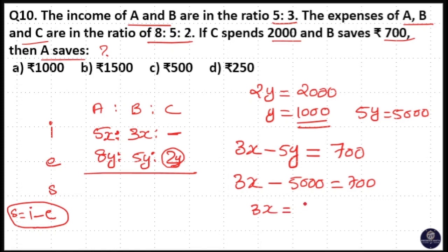Here 3x we don't know the value and 5y is equal to 5000. So that is equal to 700. That means 3x is equal to 5700 and x is equal to 5700 divided by 3. That means x is equal to 1900.